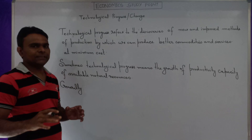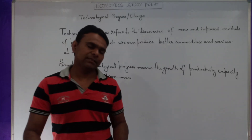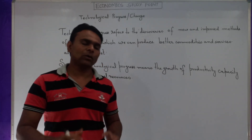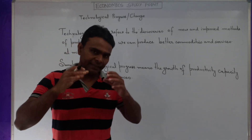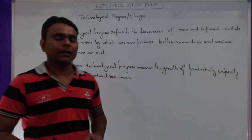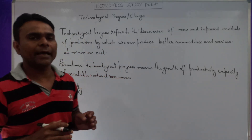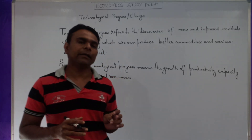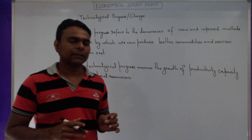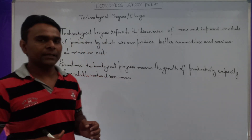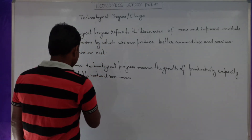Generally, technological progress means the growth of productivity capacity of factors of production like land, labor, capital, and management.